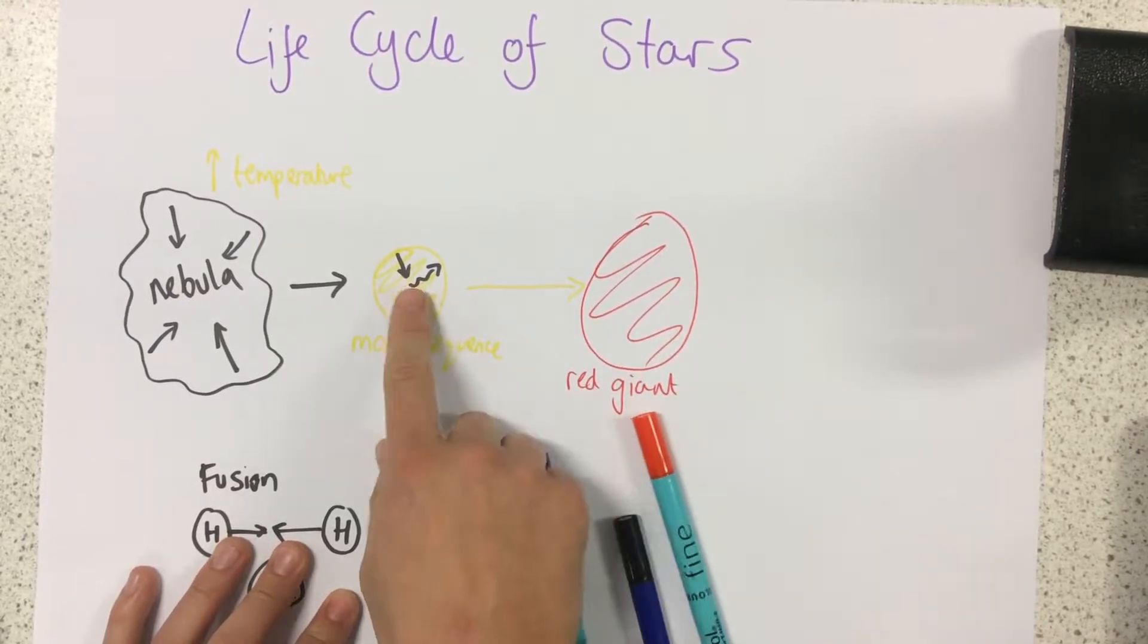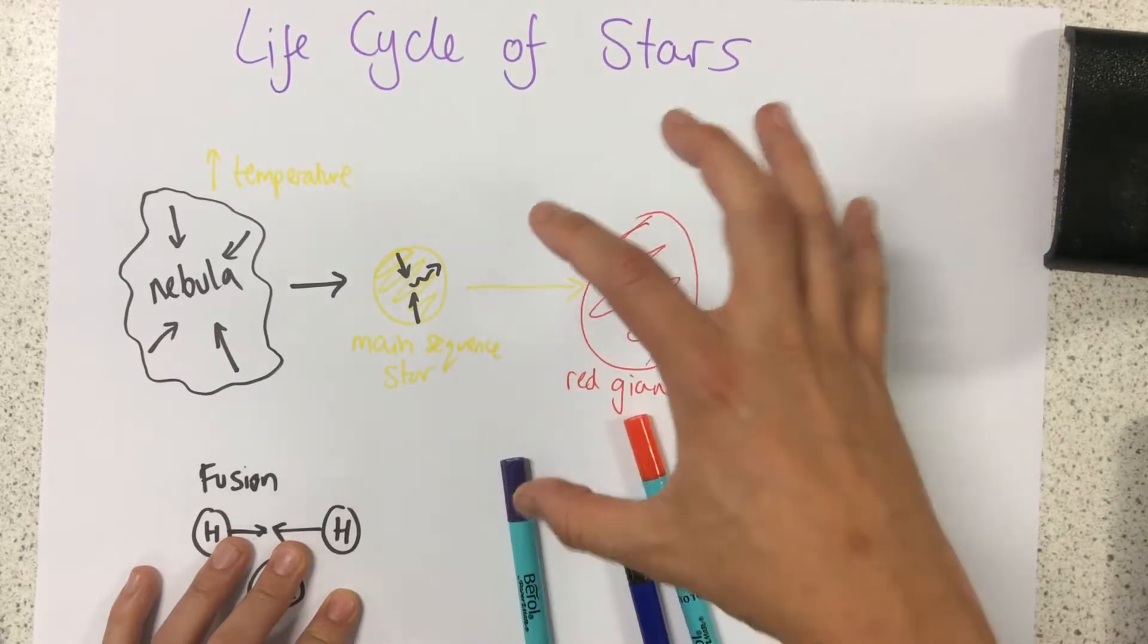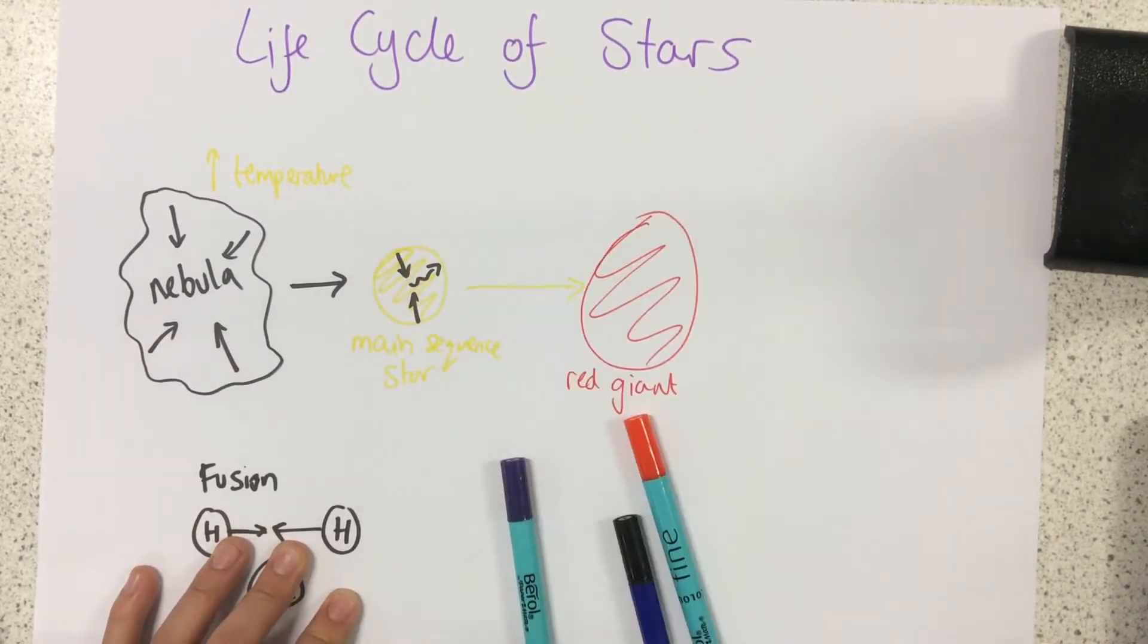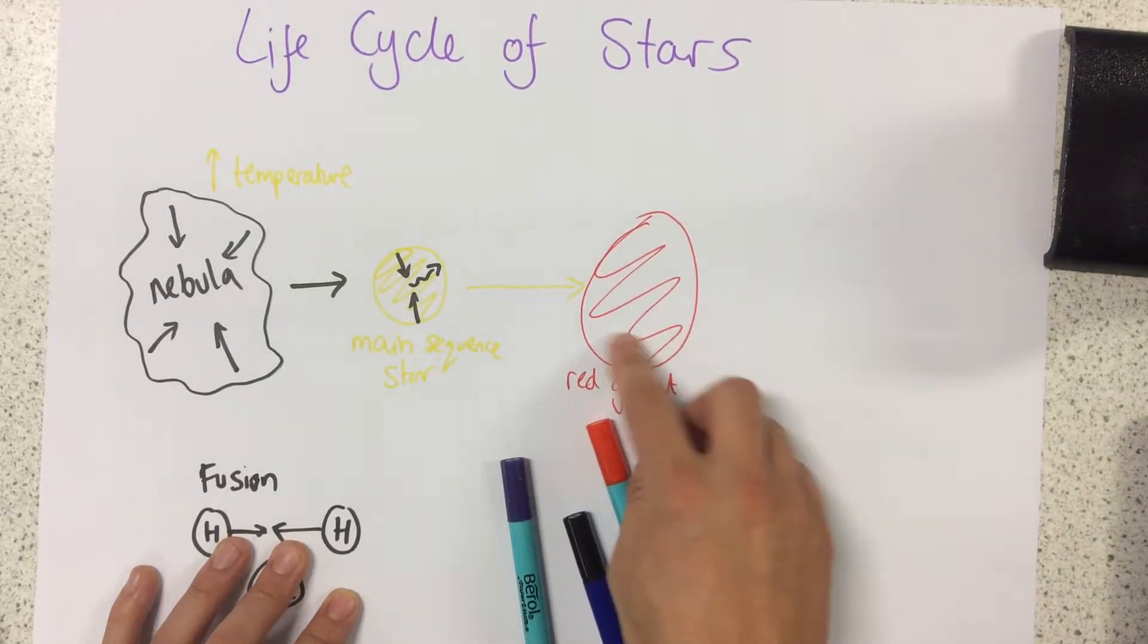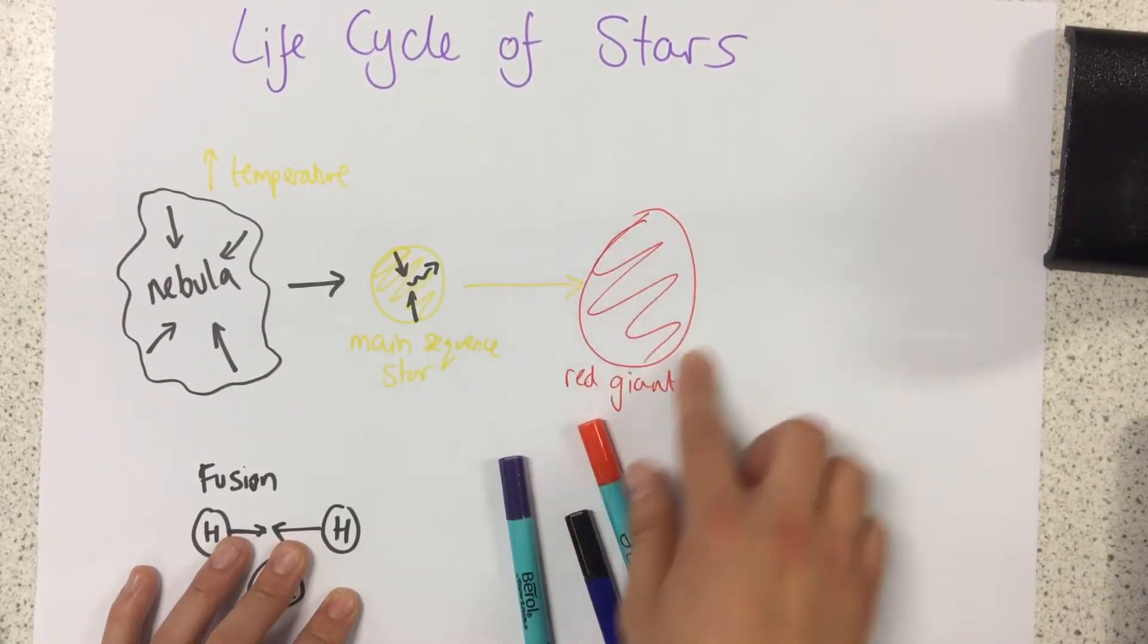This is because all of the hydrogen has run out in the core and it's caused the star to swell up to this enormous size. It becomes red because the surface is slightly cooler than it was before.